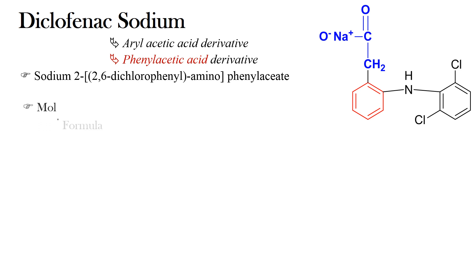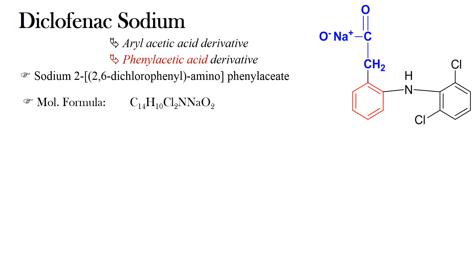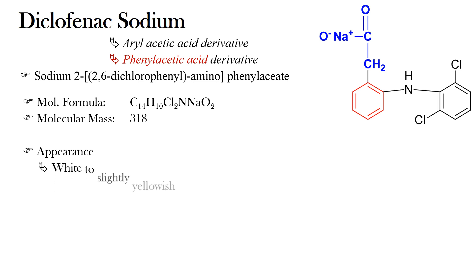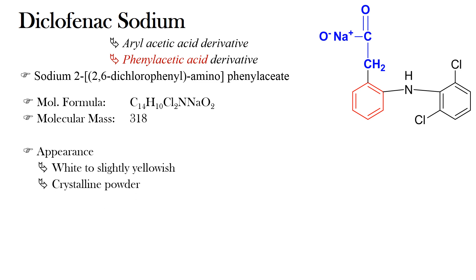The molecular formula of Diclofenac sodium is C14, H10, Cl2, N, NaO2, and the molecular mass is 318. Coming to the appearance, Diclofenac sodium appears as a white to slightly yellowish crystalline powder, which is slightly hygroscopic in nature.